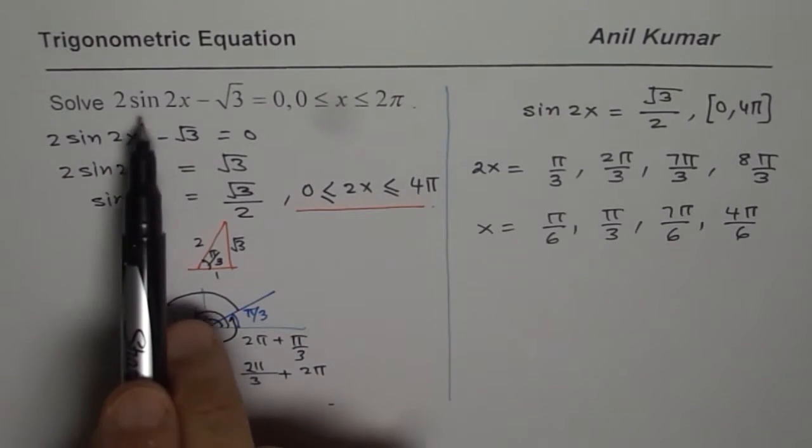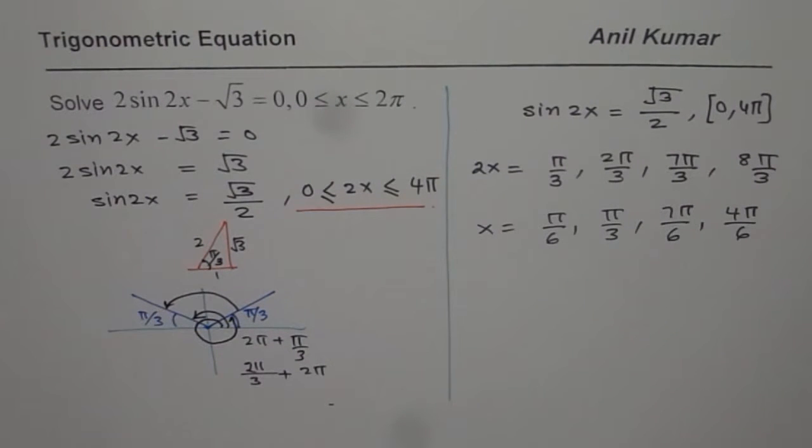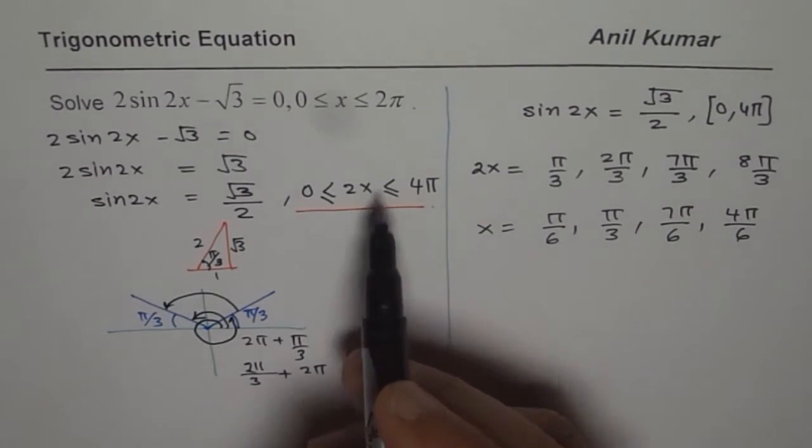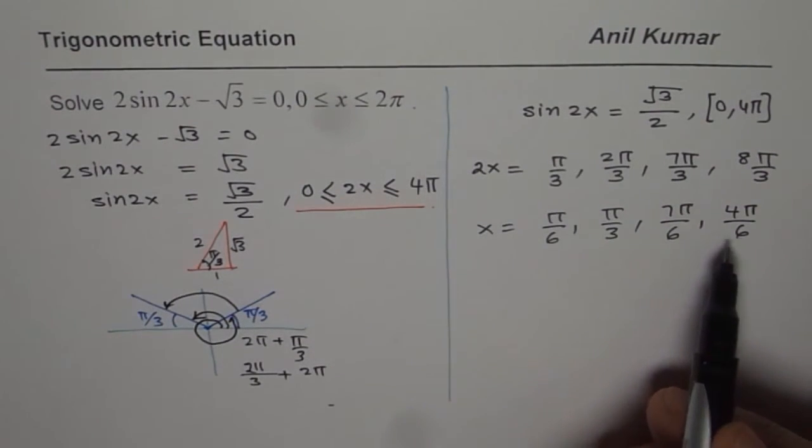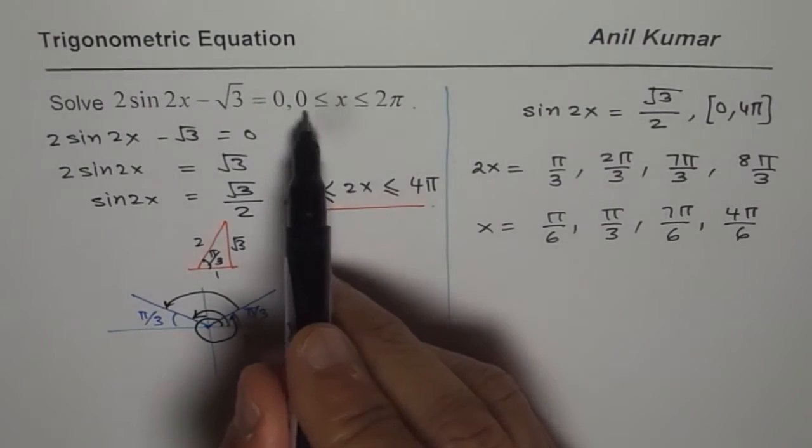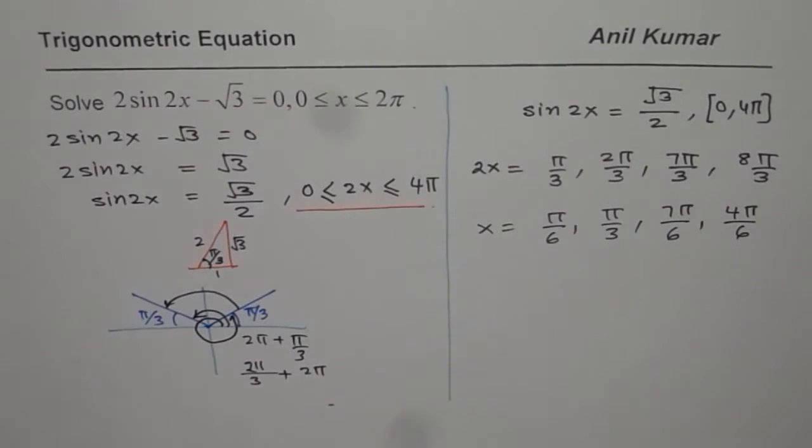Remember, whenever you are working with compound angles, double angles, multiple angles, the domain changes. Now you can very clearly see the solution for x is within 0 to 2π and you have four different solutions.